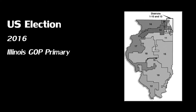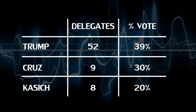Trump had a big win in the Illinois primary on March 15, netting 52 out of 69 delegates up for grabs in that state. Given those numbers, you might be inclined to believe that Trump won the vote by a wide margin — not so. Trump only obtained 39% of the popular vote, compared to Ted Cruz who got 30% of the vote and 9 delegates. Kasich managed 8 delegates on just 20% of the vote, while Rubio, who won 9% of the vote, ended up with no delegates.